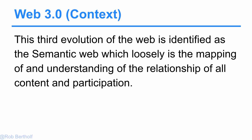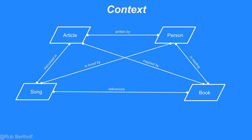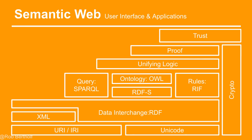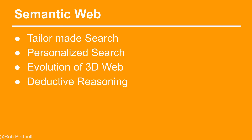We're right now in Web 3.0. Web 3.0 is the third evolution of the web, identified as the semantic web — loosely, that means it's mapping and understanding the relationship of all the content and its participation with each other. An article might be written by a particular person, that person might be reading a specific book, a song might reference that book, a person loves the song — this idea of understanding the relationship of data forms the semantic web. In a nutshell, it allows for tailor-made search, personalized search, and really a deductive reasoning.